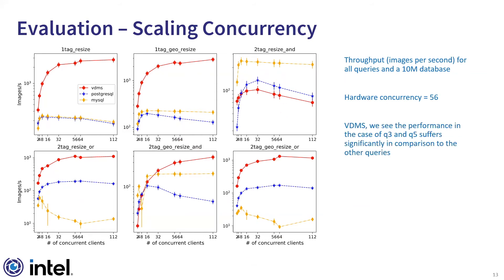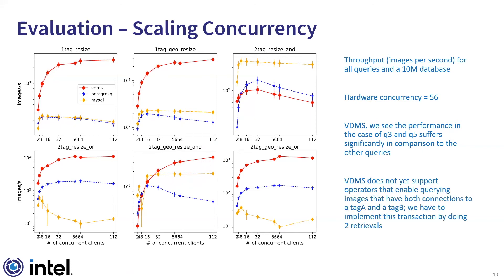For Query 3, the throughput seems to decrease after 32 clients and both baselines outperform VDMS. In the case of Query 5, the throughput of the baselines is lower than that of VDMS up to 16 concurrent clients, but at 16 clients the MySQL baseline begins to stabilize while PostgreSQL begins to degrade. However, as concurrency increases beyond 16 clients, the difference becomes clear with VDMS reaching its peak performance at 112 concurrent clients. The reason for this lack of scalability lies in the query implementation: VDMS does not yet support operators that enable querying images with both a tag A and a tag B connection, so we implement this transaction by doing two retrievals — applying an intersection operation on the client side and then doing a second retrieval to prune the metadata and retrieve the images.